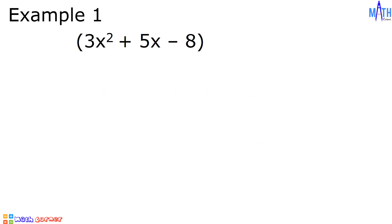3x squared plus 5x minus 8 divided by x minus 2. In this example, the dividend and the divisor are already written in standard form. Let us write the coefficients of the dividend. If there are missing terms, we will write 0 as the coefficient.